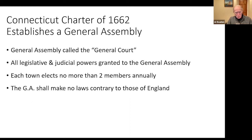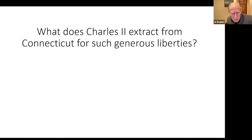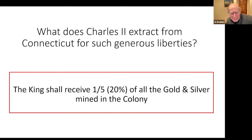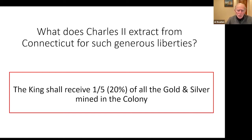So what does Charles II extract from Connecticut for such general liberties? The king shall receive one-fifth — twenty percent — of all the gold and silver mined in the colony. I thought that was a pretty amazing good deal, until my sister called me up doing a genealogical project on an aunt who had been committed to the Middletown mental hospital. She wanted me to go see a plaque of all the people buried there and asked where to find it.